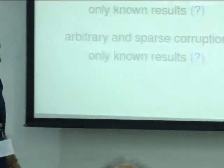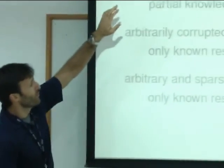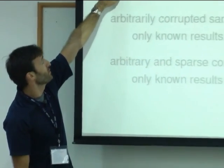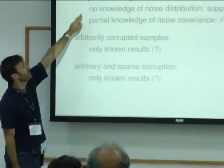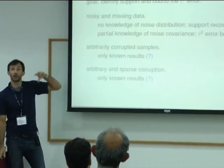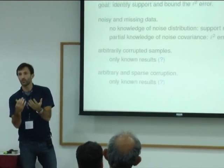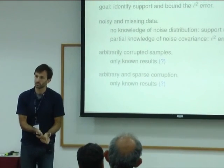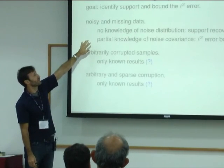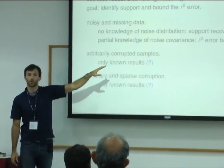So the algorithms that I'll present are simple in the sense that they're no more complicated than orthogonal matching pursuit. They're greedy. And the goal is to identify support and bound the L2 error. So for the noisy and missing data, there's two results of interest. The first is that you can get support recovery if your X is noisy and missing without having any knowledge whatsoever of the noise.